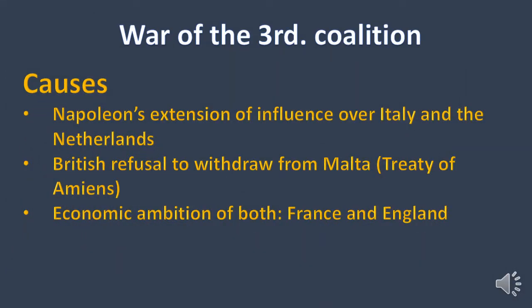Before dealing with the war of the Third Coalition, you should remember that it is a consequence of the Second Coalition War, when Great Britain didn't keep her promise of giving back some lands to Napoleon. The British were also alarmed by Napoleon's extension of influence over Italy and the Netherlands, and also his alliance with Spain. As regards Napoleon, he was furious by the British refusal to leave Malta in accordance with the Treaty of Amiens.